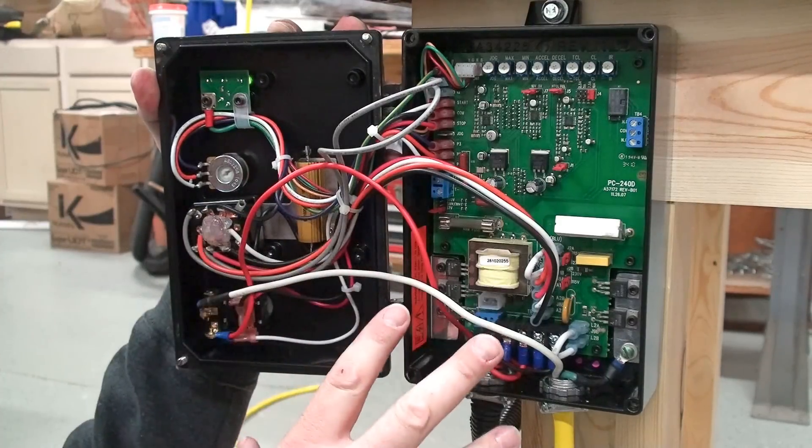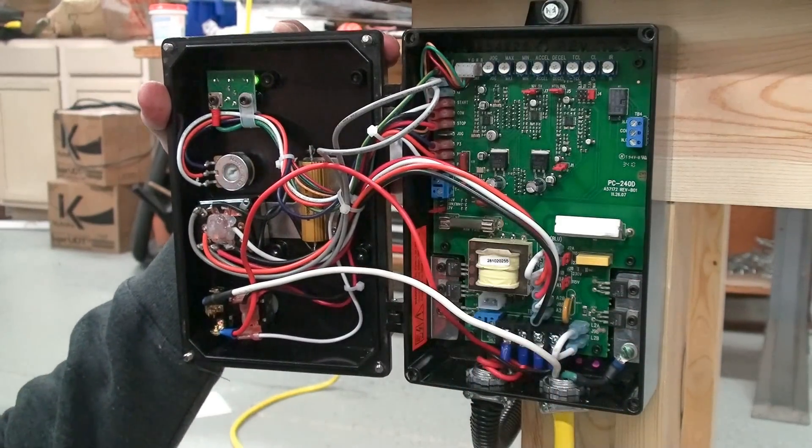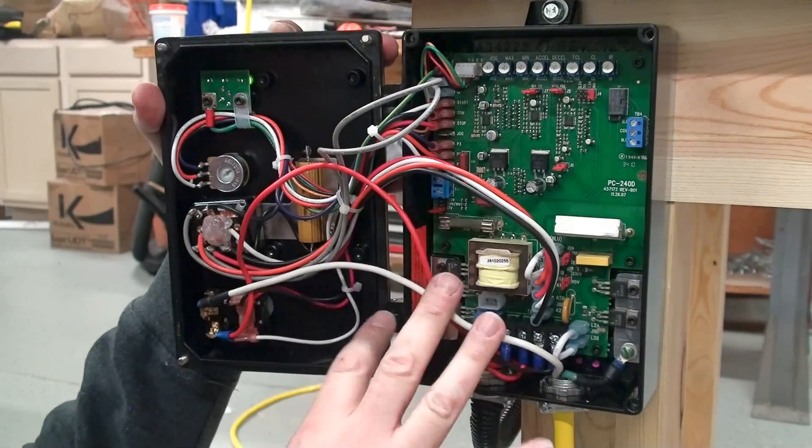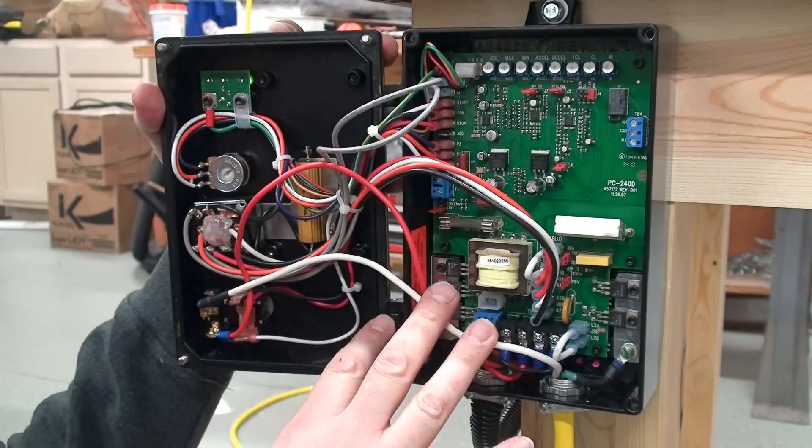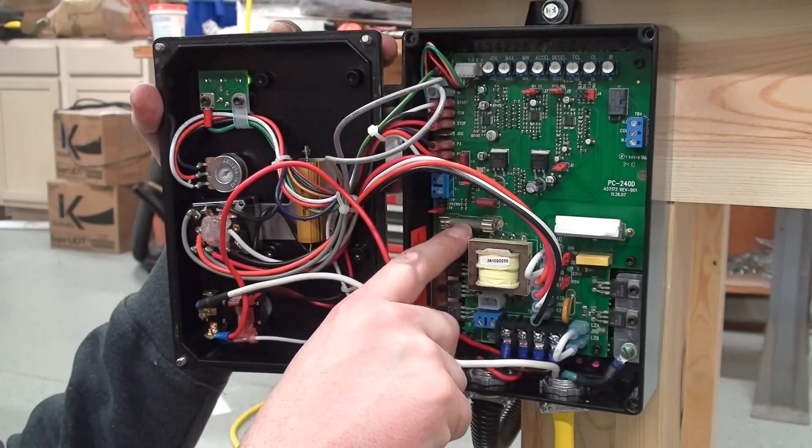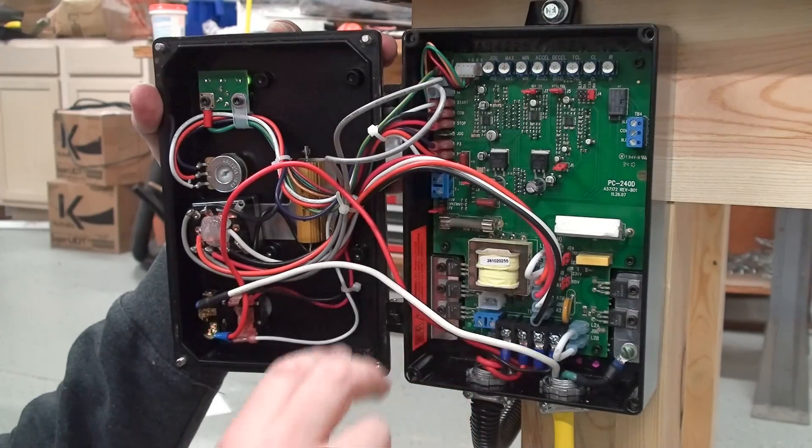Now the electronics in here are very easy to understand. The manual didn't come with this particular box, but KB Electronics has a manual online. Sometimes you might have to get a fuse with it. Mine came with a fuse, but most of the time they don't come with a fuse. You have to buy that separately.